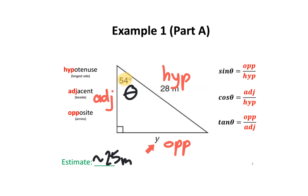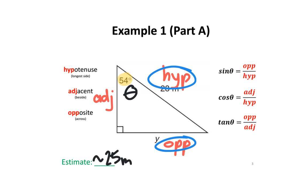We are trying to find Y, so I should circle the opposite side, since that is what I'm looking for. To find an unknown, you'll need the help of other numbers. We know that the hypotenuse is 28 meters, so let's circle the hypotenuse side. Now look at the three trigonometric ratios carefully — which one contains both hypotenuse and opposite? You'll notice that the sine ratio contains both opposite and hypotenuse, and that is the ratio we'll be using.